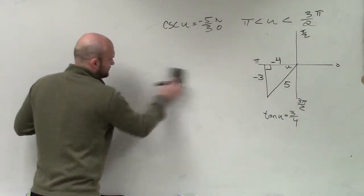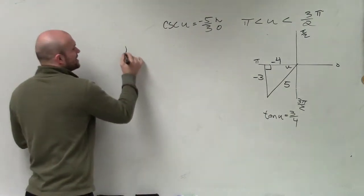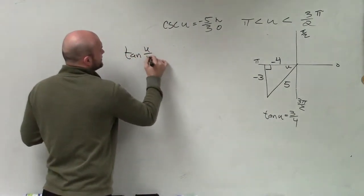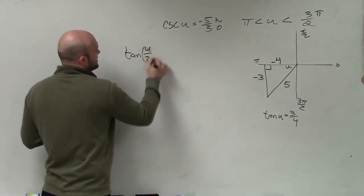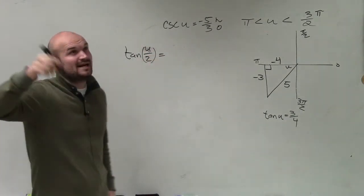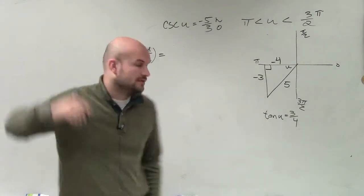Yeah. OK. Sorry. So this one, I'm sorry. So the tangent of the half angle. Sorry about that. You're right. Thank you. OK, so that is going to be 1 minus cosine of u divided by sine, right?